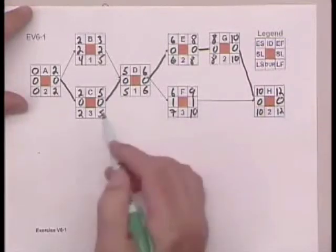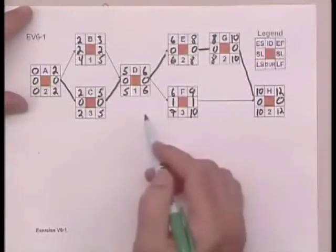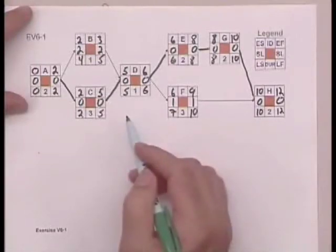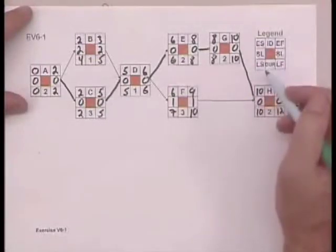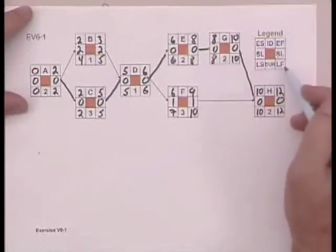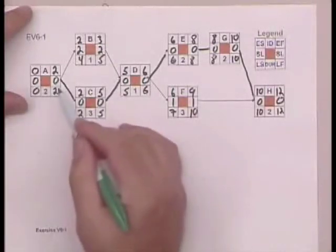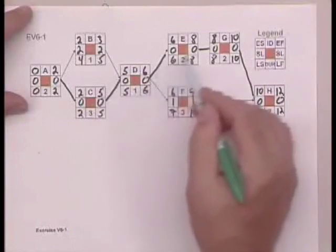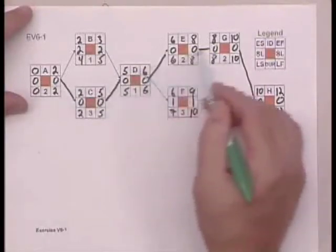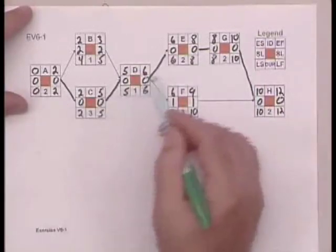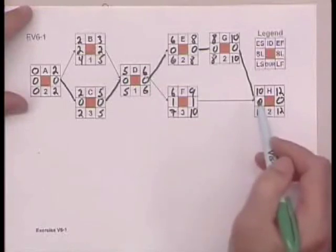So remember, when you go backwards, subtract, choose the smaller number, subtract the early start from the late start, the early finish from the late finish to identify slack, and then trace out the critical path by following the 0s. And these are the six activities along the critical path.